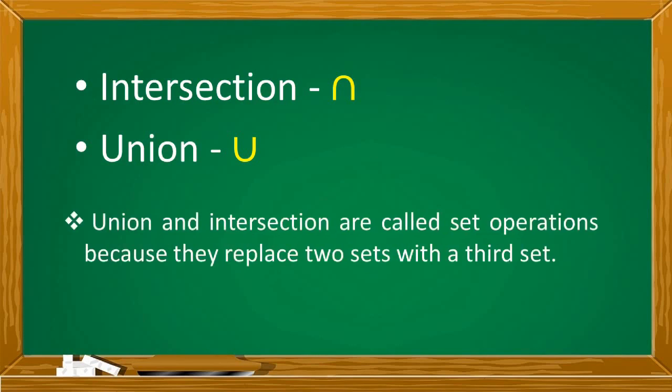Union and intersection are called set operations because they replace two sets with a third set. Operation sila dahil kapag kinumpare mo yung dalawang sets using union and intersection, may mabubuong another set or yung set na pinakasagot natin. Example, sa addition, 2 plus 3. The operation used is addition. May mabubuong pangatlong number. 2 plus 3 is equal to 5.